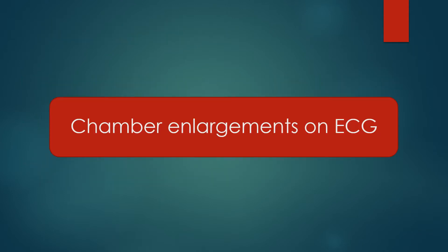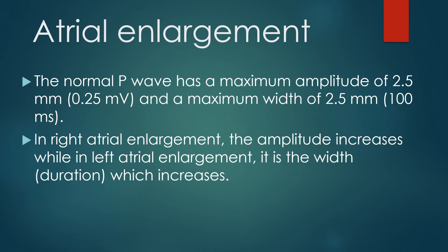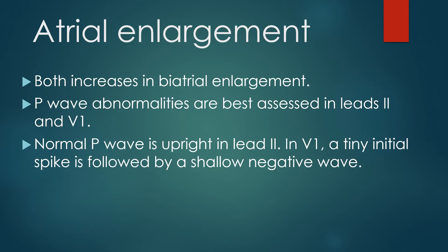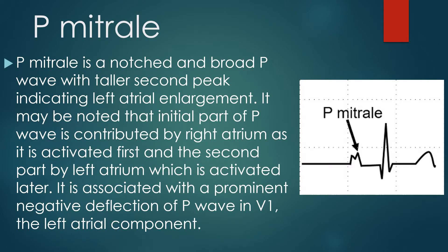The normal P wave has a maximum amplitude of 2.5 mm and a maximum width of 2.5 mm. In right atrial enlargement, the amplitude increases, while in left atrial enlargement, it is the width or duration of the P wave which increases. Both amplitude and width increase in bi-atrial enlargement. P wave abnormalities are best assessed in leads 2 and V1. Normal P wave is upright in lead 2. In V1, a tiny initial spike is followed by a shallow negative wave. P mitrale is a notched and broad P wave with a taller second peak indicating left atrial enlargement.